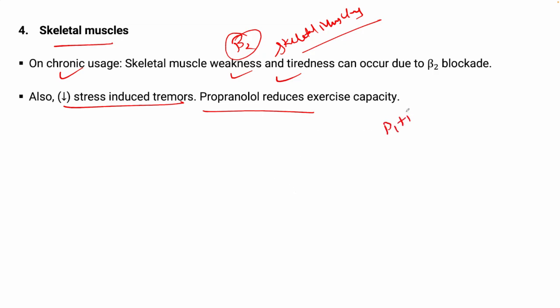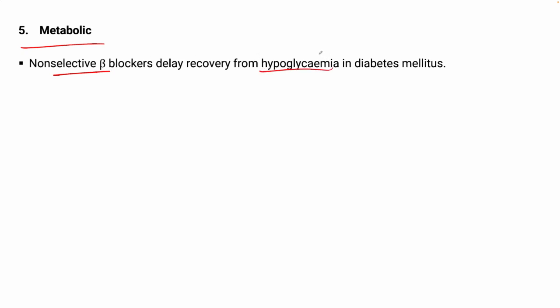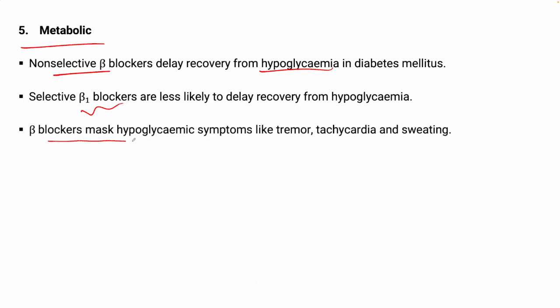Regarding metabolic effects: non-selective beta blockers can delay recovery from hypoglycemia in diabetes mellitus, whereas selective beta-1 blockers have less effect on this. Beta blockers also mask hypoglycemic symptoms such as tremor and tachycardia. This occurs because beta blockers block the release of norepinephrine, which reduces heart rate and tremor — thereby masking the warning signs of hypoglycemia.